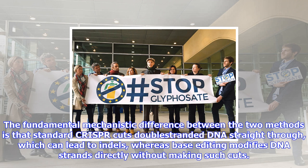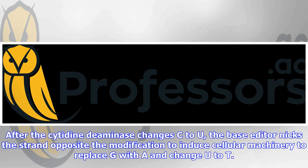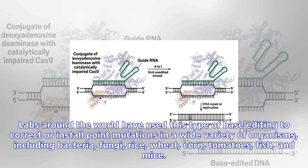Liu and co-workers developed last year's base editor by combining three proteins: cytidine deaminase, a natural enzyme that converts C to uridine (U); a mutated Cas9 CRISPR enzyme that does not cut DNA but uses an associated guide RNA to target specific DNA sequences; and a protein that prevents reversion of U back to C. After the cytidine deaminase changes C to U, the base editor nicks the strand opposite the modification to induce cellular machinery to replace G with A and change U to T.